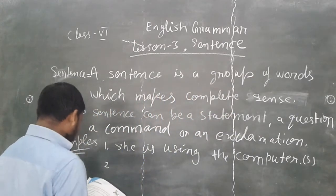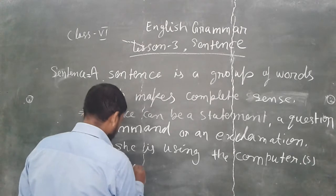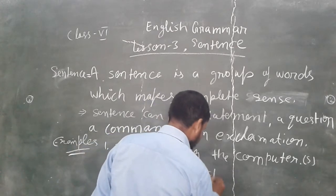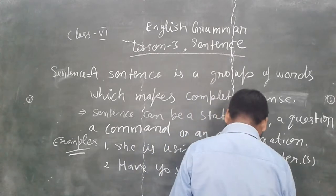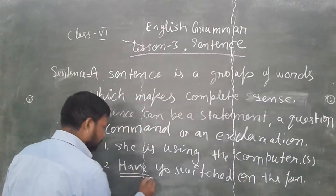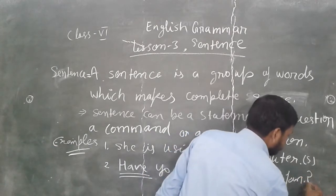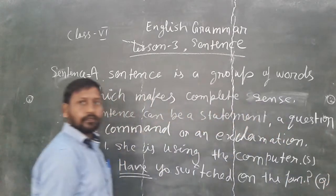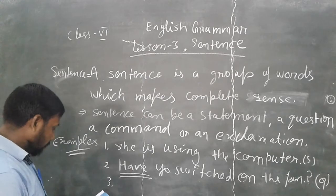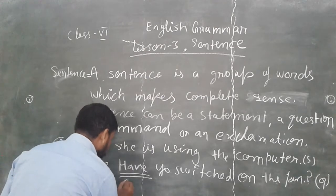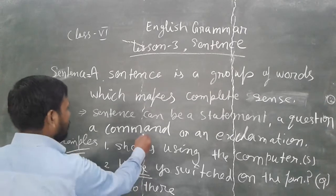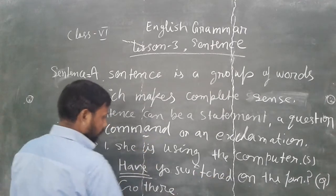The second example is: 'Have you switched on the fan?' It has started with 'have', so here there should be a question mark. That means it is a question sentence. The third example is: 'Go there.' That is a command — if anybody is telling you to do something, that is a command.